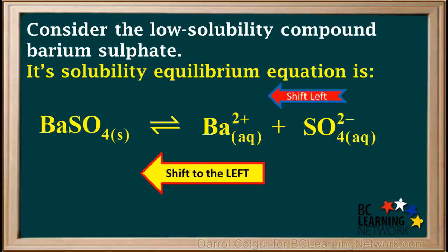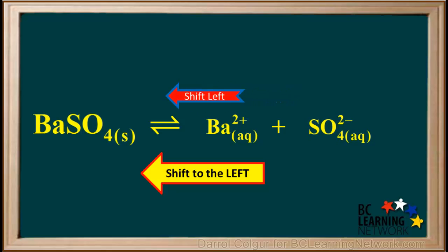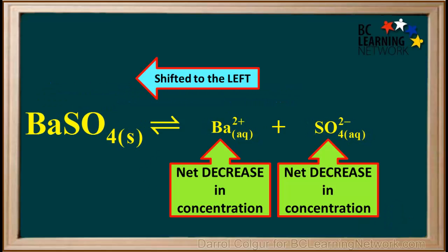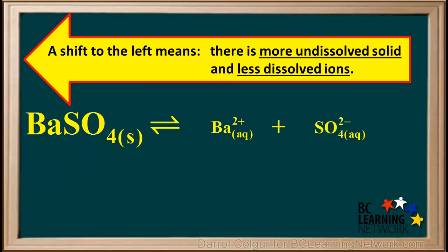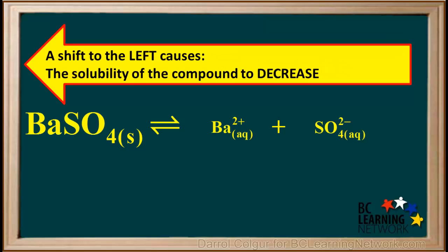Anything which causes this equilibrium to shift to the left results in both dissolved ions having a net decrease in concentration, and the undissolved solid having an increase in mass. Remember, we cannot change the concentration of a solid, only the amount or mass of solid present in the container. So a shift to the left means there is more undissolved solid and less dissolved ions — this means solubility decreases. Shifting to the left decreases the solubility. This is something you should always remember.